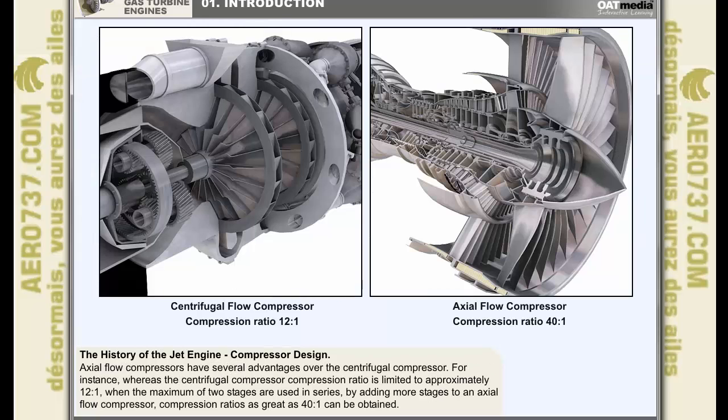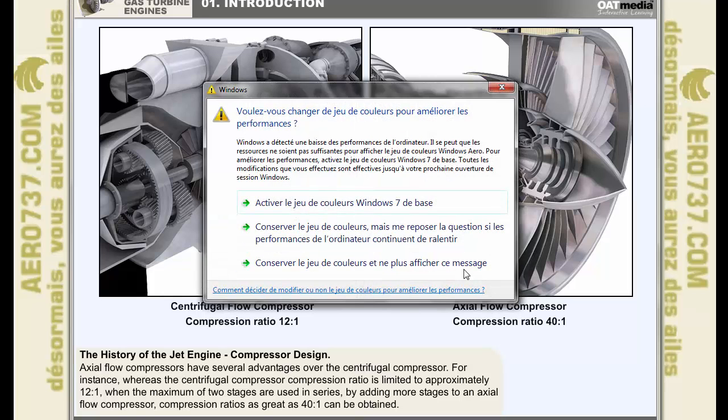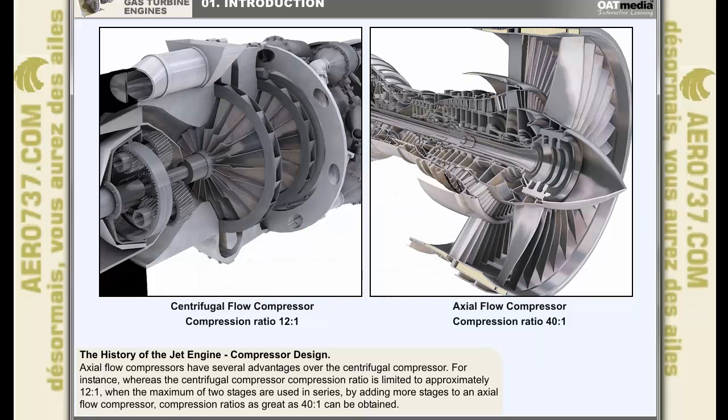Axial flow compressors have several advantages over the centrifugal compressor. For instance, whereas the centrifugal compressor compression ratio is limited to approximately 12 to 1 when the maximum of two stages are used in series, by adding more stages to an axial flow compressor, compression ratios as great as 40 to 1 can be obtained. The term compression ratio refers to the ratio of the pressure at the outlet of a compressor to that at its inlet.